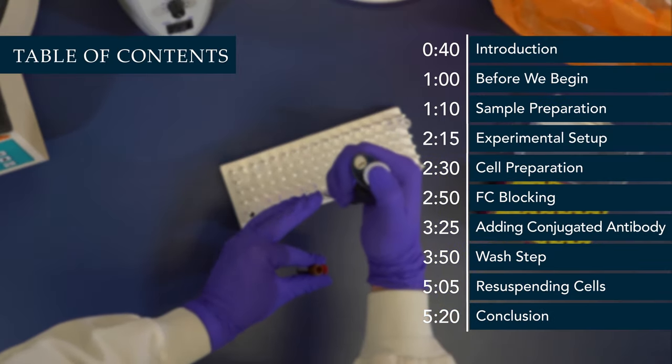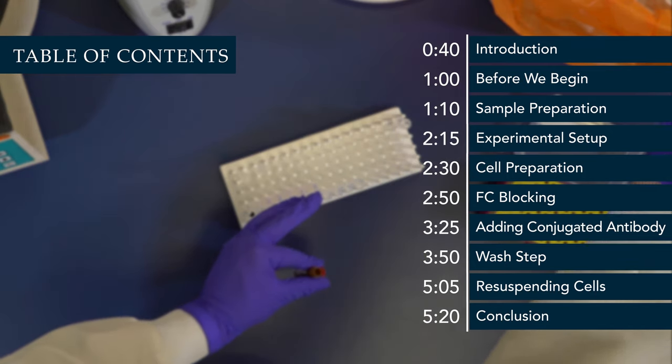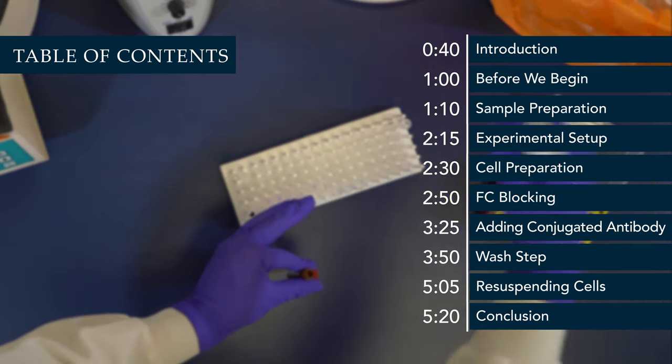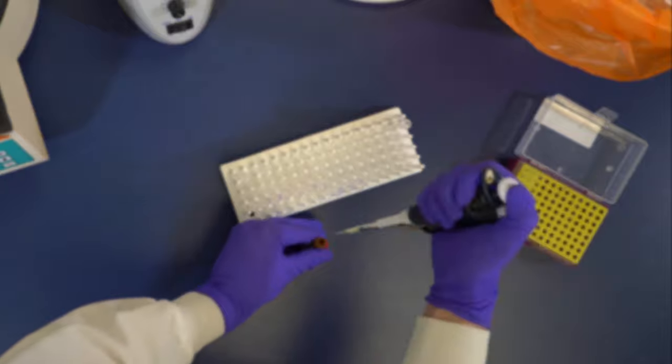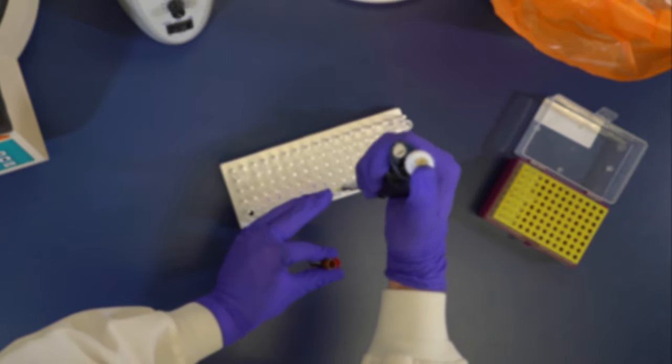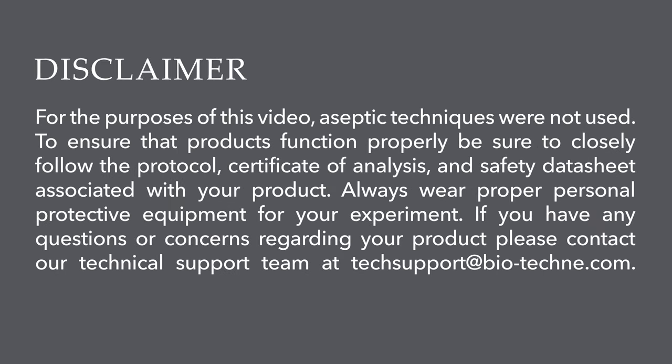In this protocol, we are using suspended cells. Phenotyping suspended cells based on antigens present on the cell membrane is one of the most common uses for flow cytometry. Because membrane proteins are readily accessible to the antibody, permeabilization steps are not required.